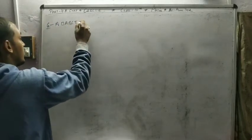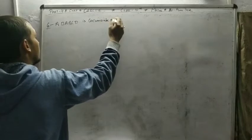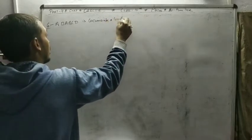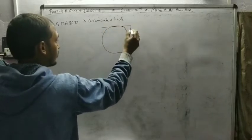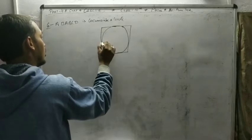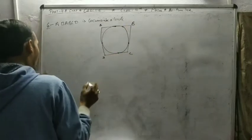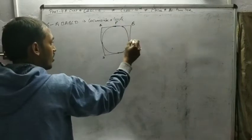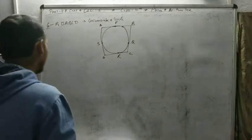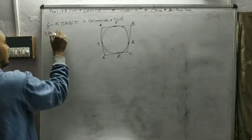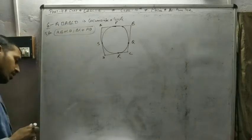It is given that quadrilateral ABCD is circumscribed on a circle — in simple words, if this is a circle, the quadrilateral is formed outside the circle. Let us suppose the tangent touch-points are P, Q, R, S. The question wants us to prove that the sum of opposite sides are equal: AB plus CD is equal to AD plus BC.